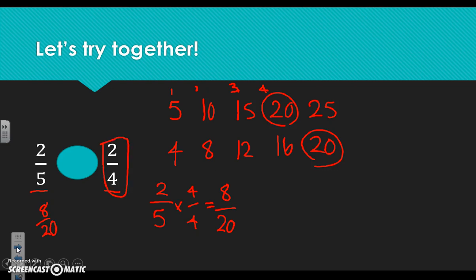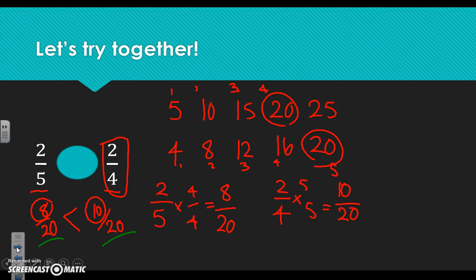Now let's take two fourths and find the equivalent fraction with a denominator of twenty. Four times what gives you twenty? Four times five is twenty, and two times five is ten, so two fourths is equivalent to ten twentieths. Since we now have the same denominator — twenty and twenty — we ask: is eight or ten greater? Ten is a greater number, so two fourths is greater than two fifths.